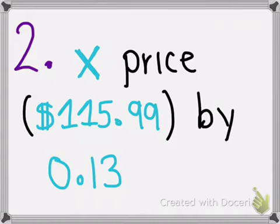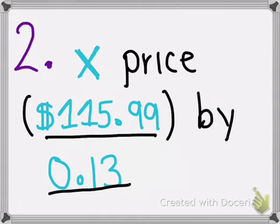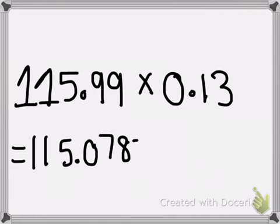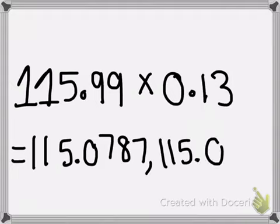The second step is to multiply the price, which is 115.99, by 0.13, which was now the decimal. This gives you the answer of 15.0787, but you would want to round it up, which gives you the answer of 15.08.